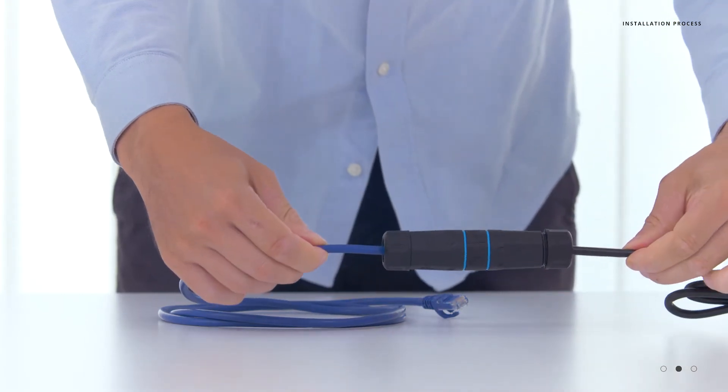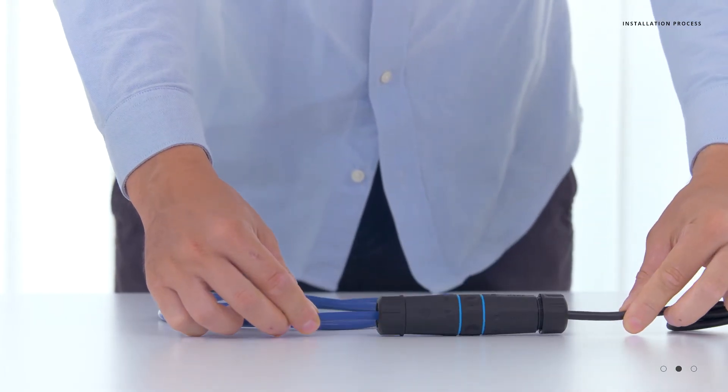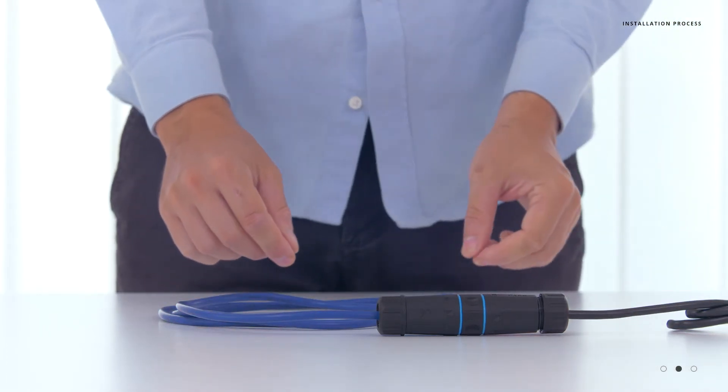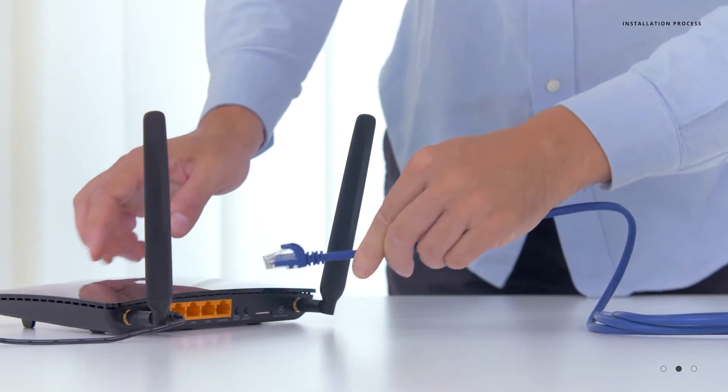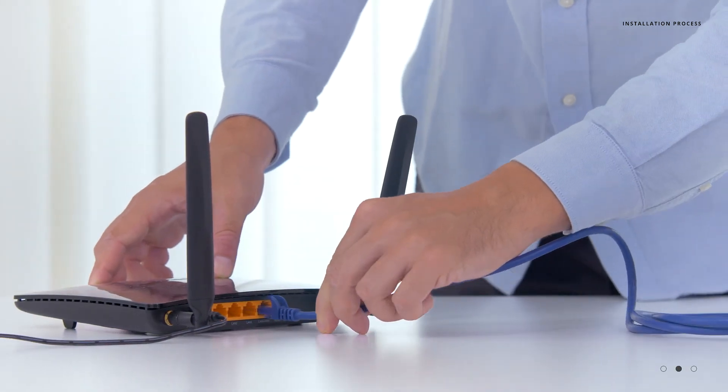Make sure you're abiding by normal networking rules as far as Cat5 cable length. Now take your extended Ethernet cable and plug it into one of the available ports on the back of the wireless router.